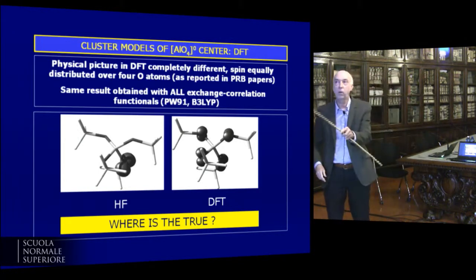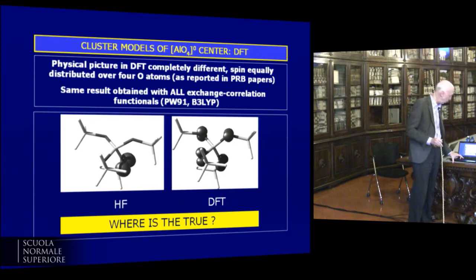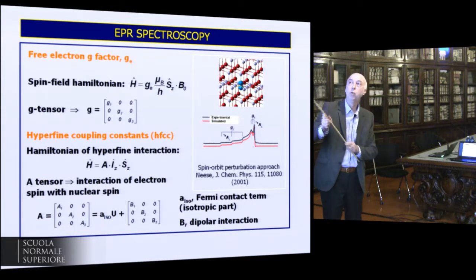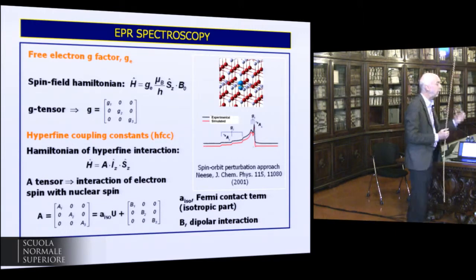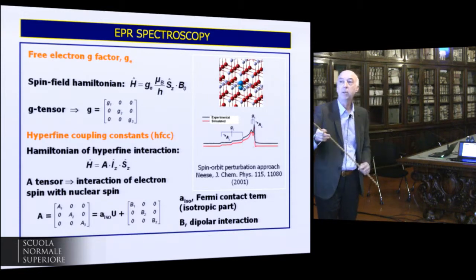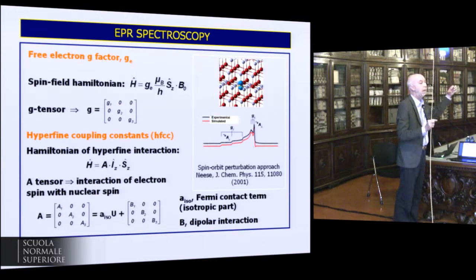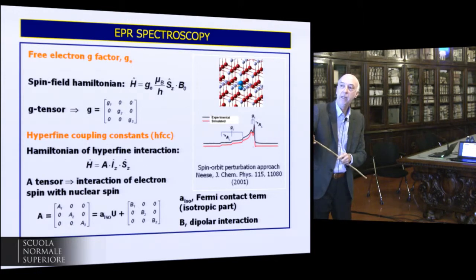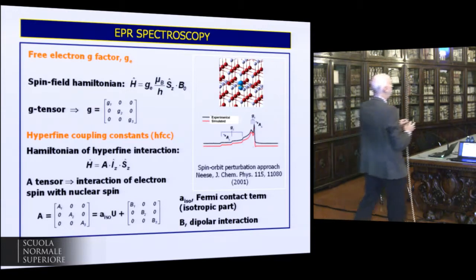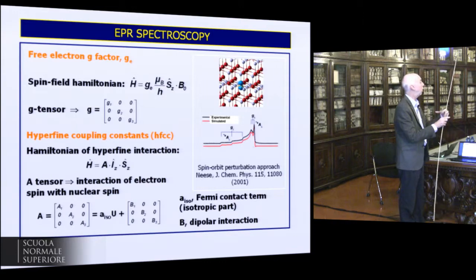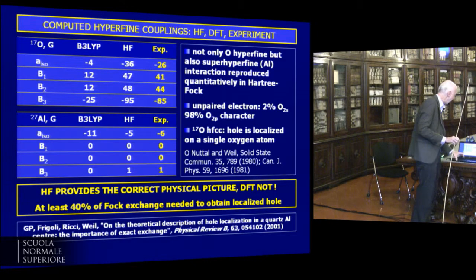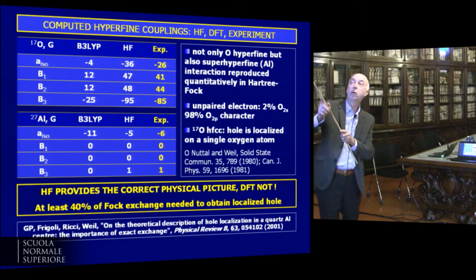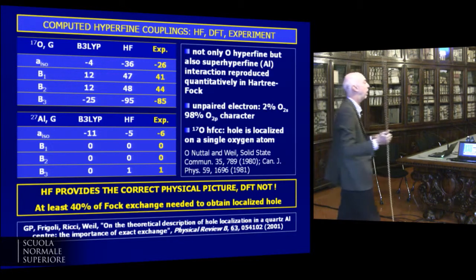So where is the truth — is it HF, which gives you a fully localized hole, or DFT, which gives you a fully delocalized hole? Here is where electron spin resonance comes into play, because it is extremely important. In EPR you have two important observable quantities: the G-tensor, and the hyperfine coupling constant. In the hyperfine coupling constants, what you measure is the interaction of an electron spin with a nuclear spin, which provides very direct information about the distribution of spin around the nuclei. The A-tensor is composed of an isotropic part and a dipolar part, which gives very detailed information about the symmetry of the orbitals. When we computed the spin hyperfine coupling constants for aluminum-doped silicon dioxide, we immediately realized that the B3LYP description was very far off compared to experiment.